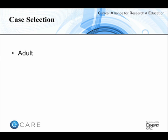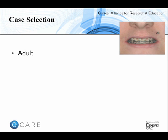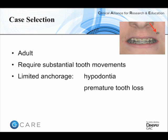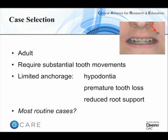When adopting mini-implant techniques for the first time, it's particularly important to identify appropriate and relatively straightforward cases. Adult patients — particularly female patients — may have various body piercings, suggesting comfort with minor procedures. Adult patients can require substantial tooth movements but may have limited anchorage potential due to hypodontia, premature tooth loss reducing anchor units, or teeth with reduced root support due to periodontal loss. But arguably there are many routine cases in both teenagers and adults that would benefit from reliable anchorage control.